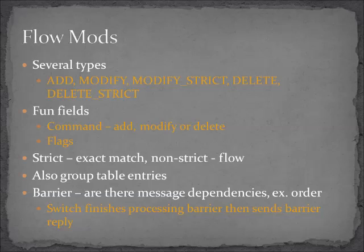Barriers handle message dependencies — for example, whether frames or packets have to be processed in a particular sequence. The other use is sending a barrier request so the switch tells you when it has completed the modification action.